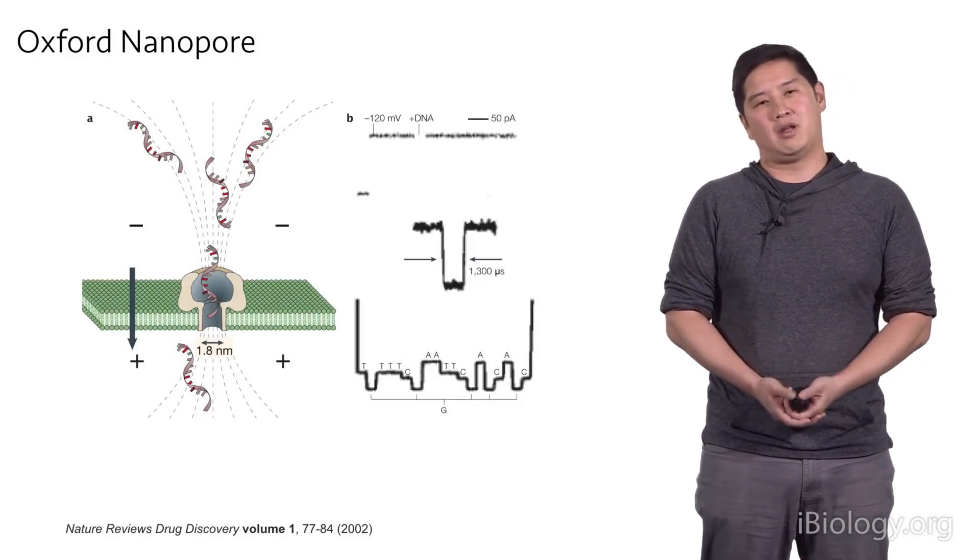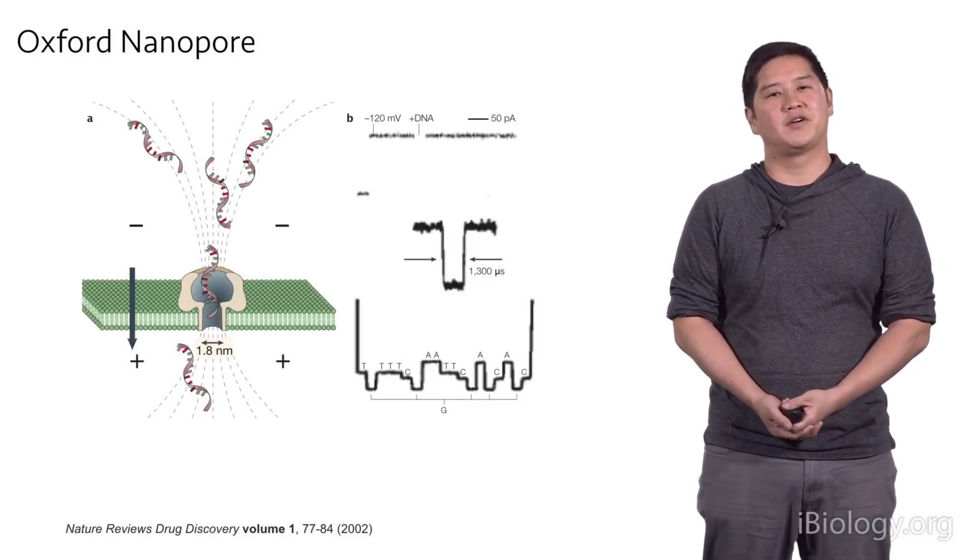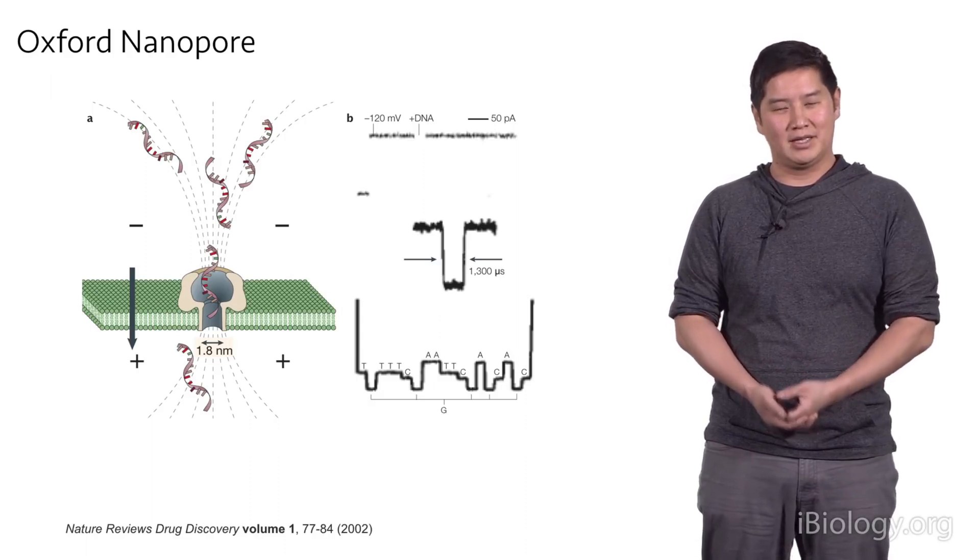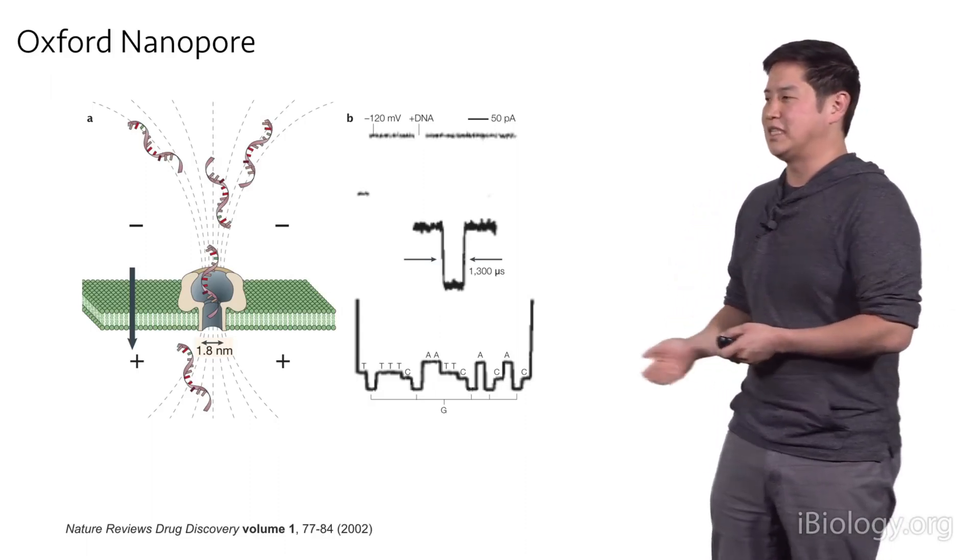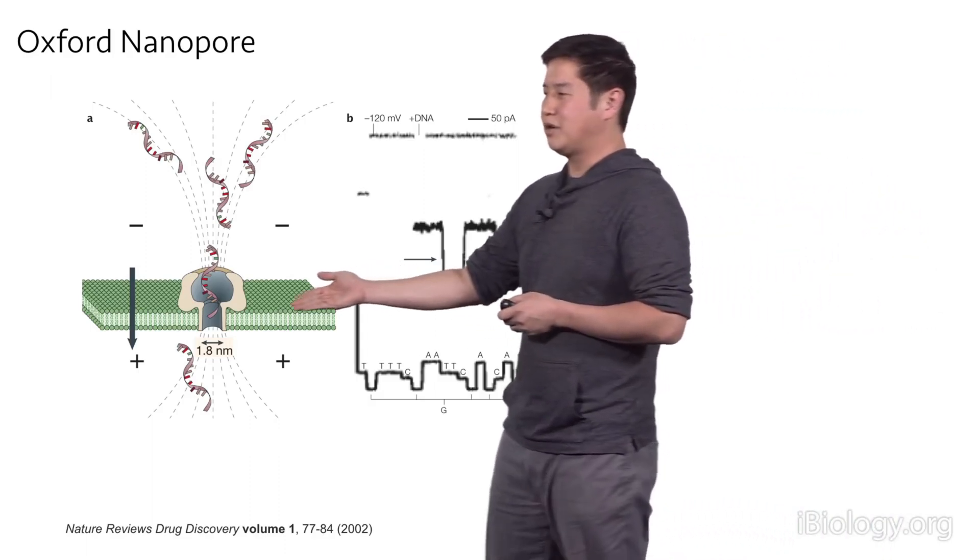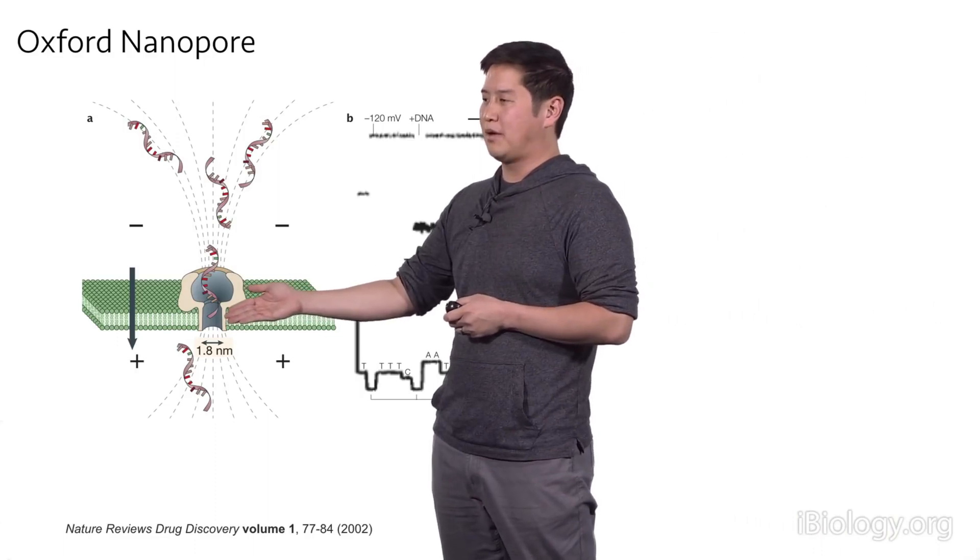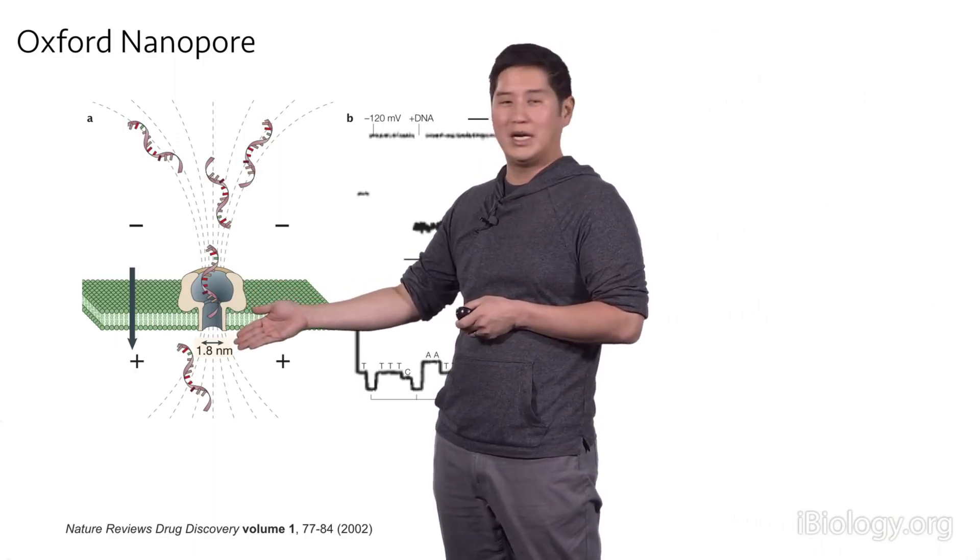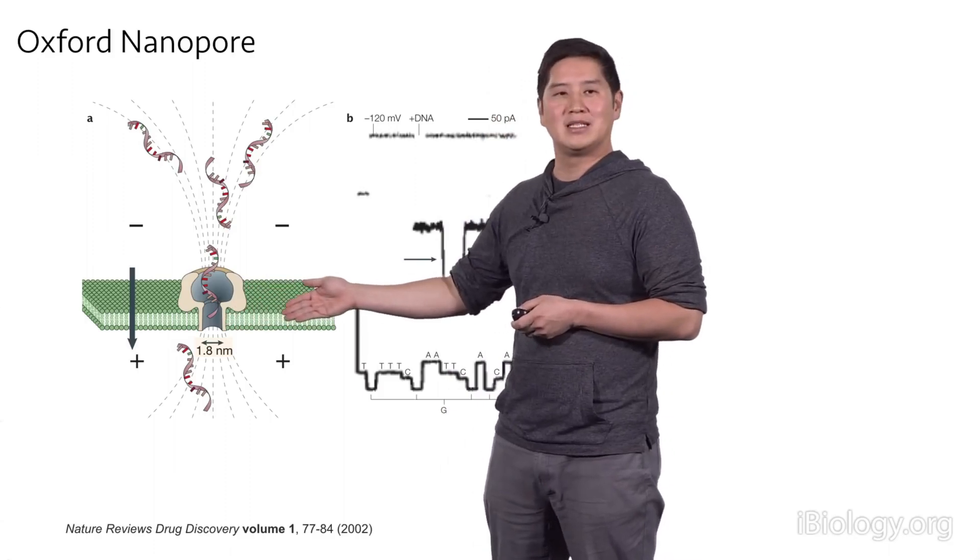So now we're going to move over to the long read sequencers. We're going to start with Oxford Nanopore Sequencing. With this sequencing technology, it uses these nanopores, which are extremely small pores with really small gaps in them, so in this case 1.8 nanometers, that are embedded in lipid membranes.